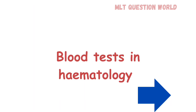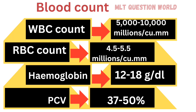Now we discuss blood test normal values in hematology. WBC count is 5,000 to 10,000 per cubic millimeter. RBC count is 4.5 to 5.5 millions per cubic millimeter. Hemoglobin is 12 to 18 gram per deciliter — 12 to 16 in females and 14 to 18 in males. PCV is 37 to 50 percentage.